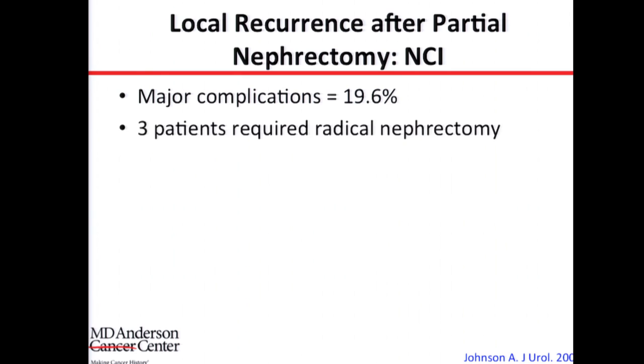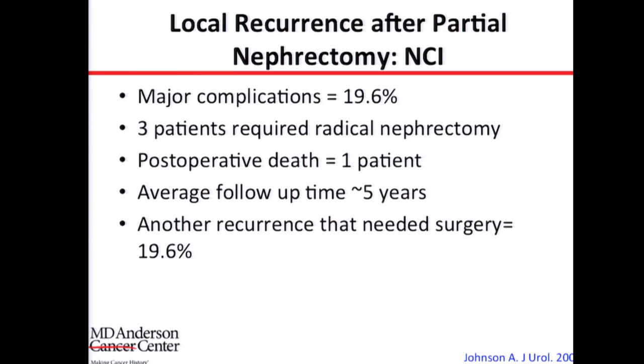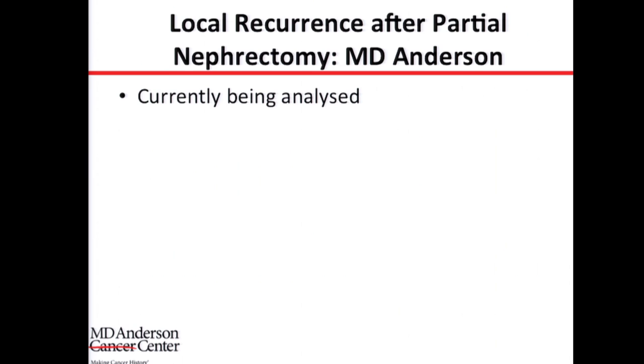The major complication rate was almost 20%. Three patients required radical nephrectomy and could not have partial nephrectomy due to injury or large tumor burden. One patient had a heart attack and died after surgery. Five-year recurrence was about 20%, which is not unusual in VHL patients — this is not what we see in sporadic single-tumor cases. The only patient who died was the one with the heart attack; the other 46 were still alive after the second repeat partial nephrectomy, showing it is doable. We are currently collecting our own data and expect to present it at next year's meeting.